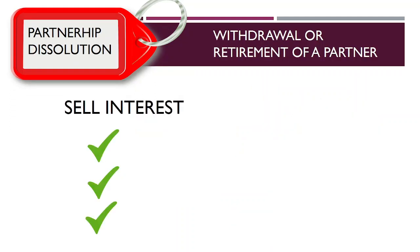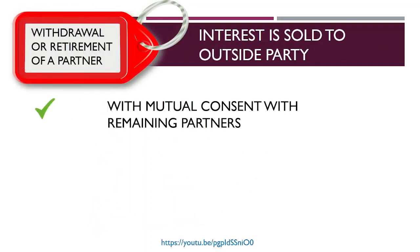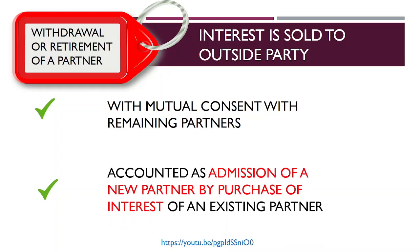In addition, in the absence of a stipulated amount in the partnership agreement, the partners must determine among themselves the amount of the retiring partner's capital refund, or what we call the capital balance. Whenever dissolution is made due to withdrawal or retirement of a partner, he may sell his interest to an outside party, to the remaining partner or partners, or to the partnership itself.